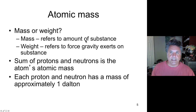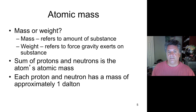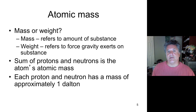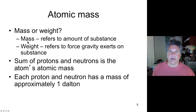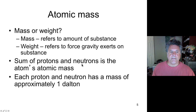Mass refers to the amount of a substance, whereas weight applies to what happens to mass when the force of gravity acts on something. The mass of a hydrogen atom on the Moon would be the same as the mass of a hydrogen atom on Earth, but it would have a different weight because the gravitational force on the Moon is much less. We don't usually talk about weight so much as mass, because mass is a constant. The atomic mass of an element is the sum of the protons and the neutrons.